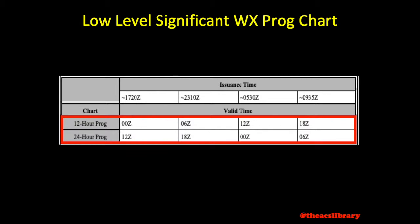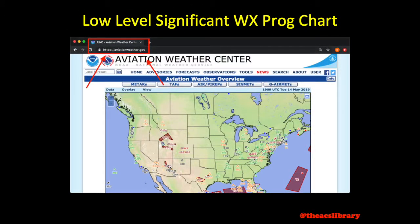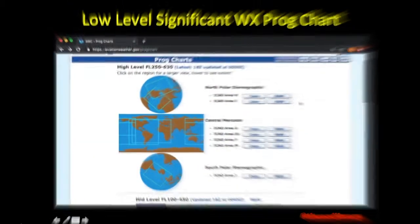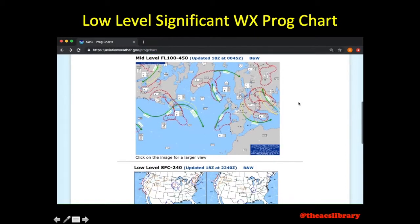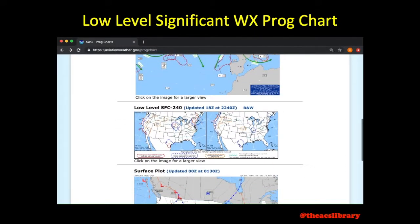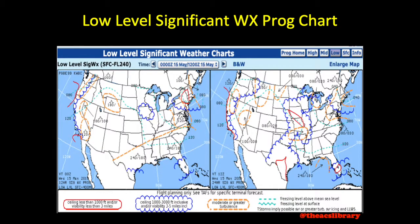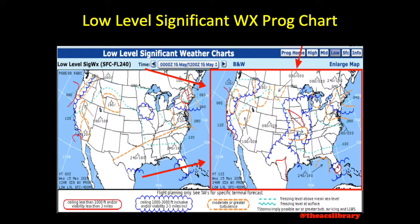Low-level significant weather prognostic charts may be viewed at www.aviationweather.gov under the Forecast tab by clicking Prog Charts. Once on the next page, scroll down until you see a map labeled Low-Level, Surface to 240. Click this map and our most current prog chart will be made available to us. The 12-hour forecast is depicted to the left and the 24-hour to the right. Previously released prog charts may be viewed under the Time drop-down menu.